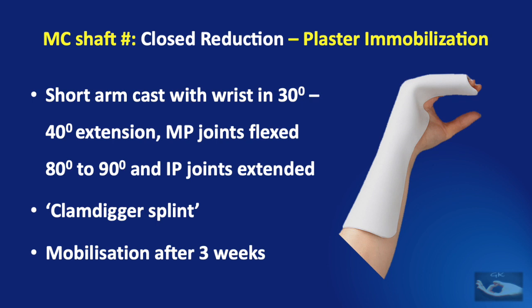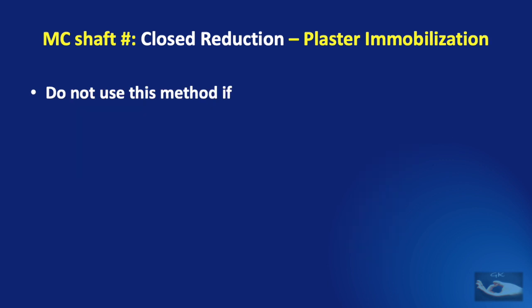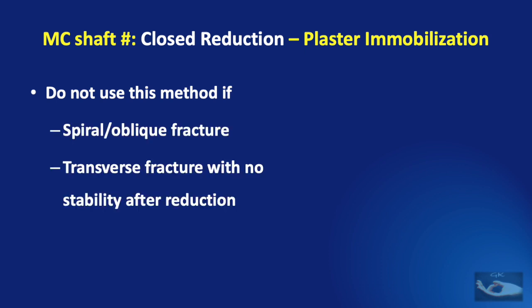After three weeks of immobilization in this position, mobilization is begun after providing a wrist stabilization splint and compression with a crepe bandage. This method of closed reduction and POP immobilization should not be used if there is a spiral or oblique fracture, if there is a transverse fracture with no stability after reduction, or if there is less area of bone-to-bone contact after reduction.